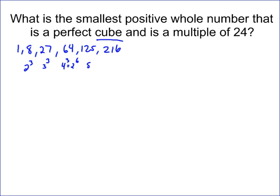125 is 5 to the 3rd. 216 is 6 to the 3rd, but that's the same as 2 to the 3rd times 3 to the 3rd.